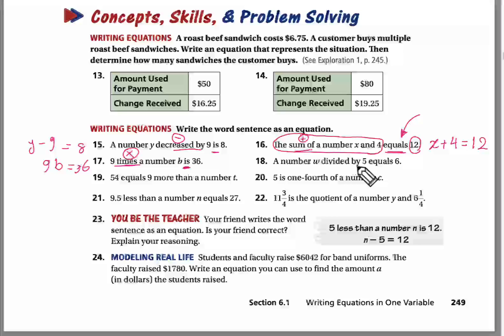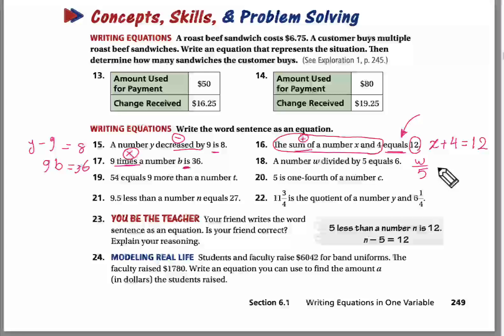Question 18: 'A number w divided by five equals six.' Mohammed answered: w divided by 5 equals 6. Excellent — you're a star! You can also write it as w over 5 equals 6.